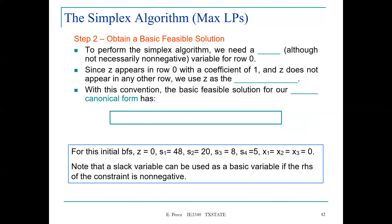Step two: obtain a basic feasible solution. To perform the Simplex Algorithm, we need a basic variable for row zero. Since z appears in row zero with a coefficient of 1 and does not appear in any other row, we use z as a basic variable. The initial basic feasible solution therefore has basic variables z, s₁, s₂, s₃, and s₄, with z = 0, s₁ = 48, s₂ = 20, s₃ = 8, s₄ = 5, and x₁, x₂, x₃ = 0. A slack variable can be used as a basic variable if the right-hand side of the constraint is non-negative.